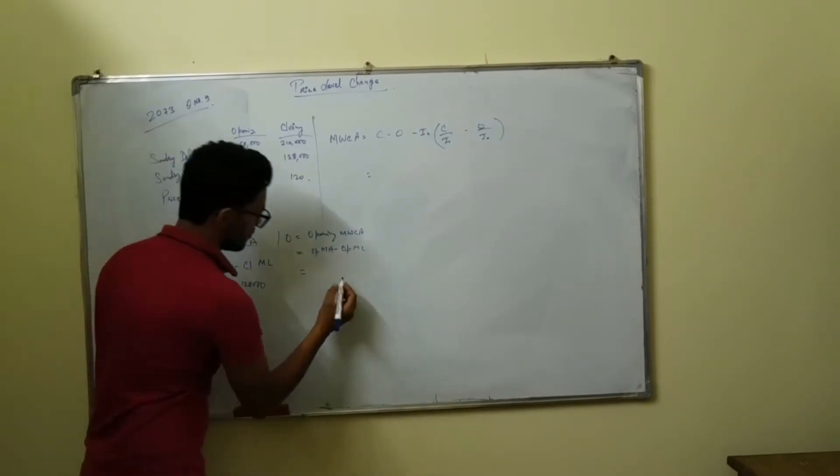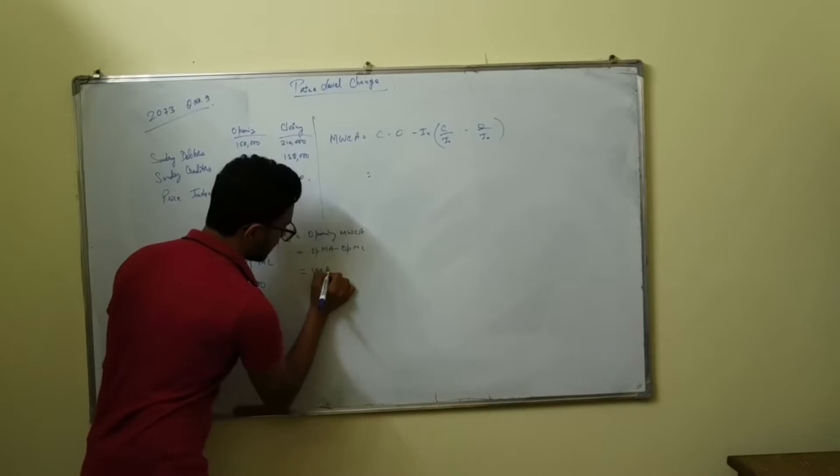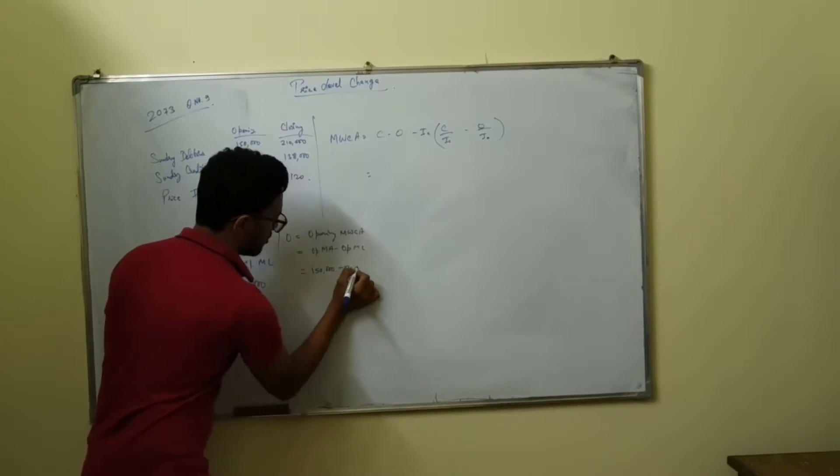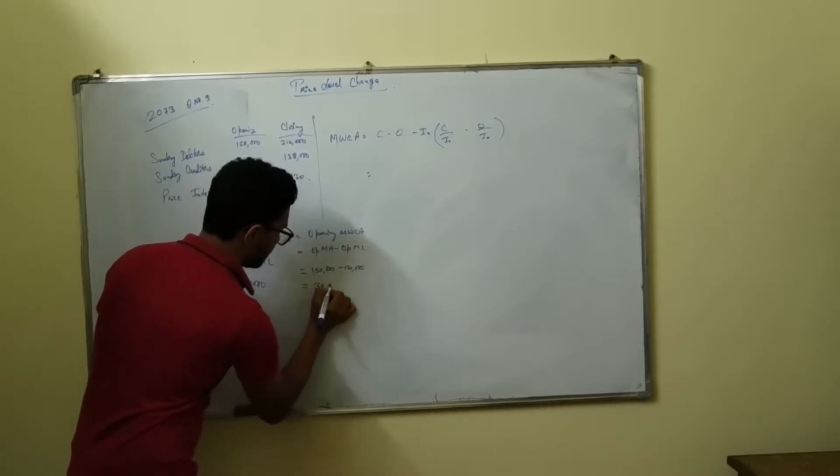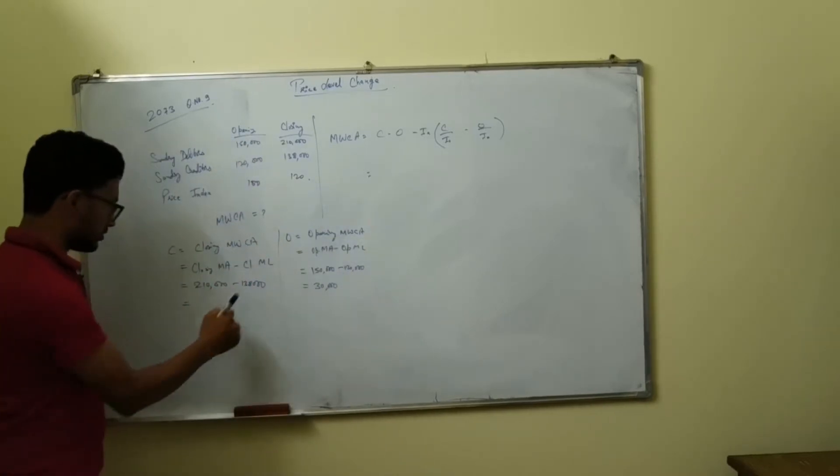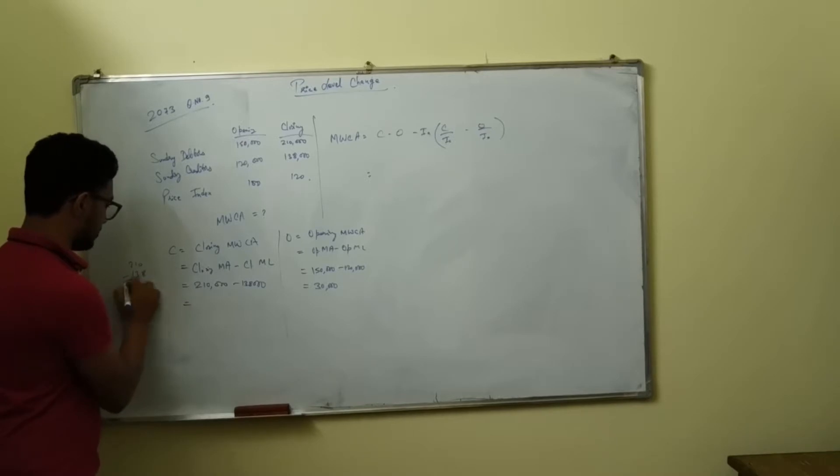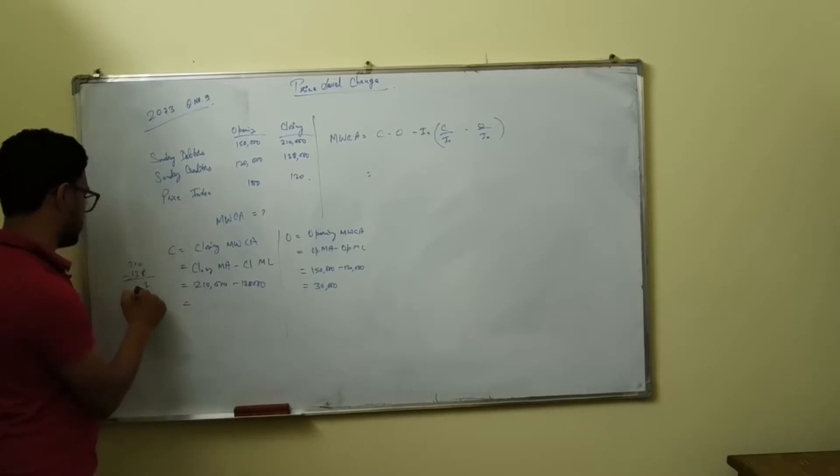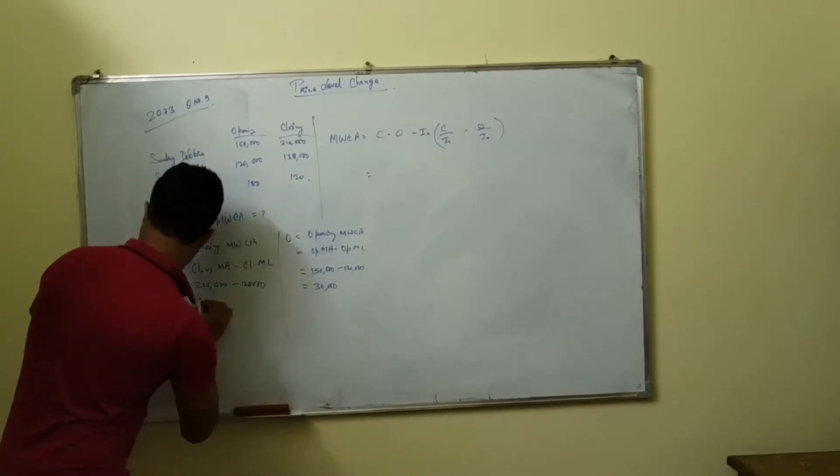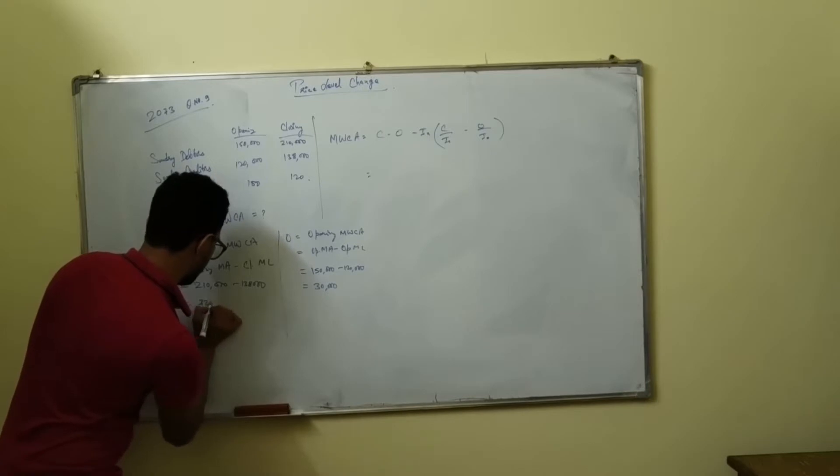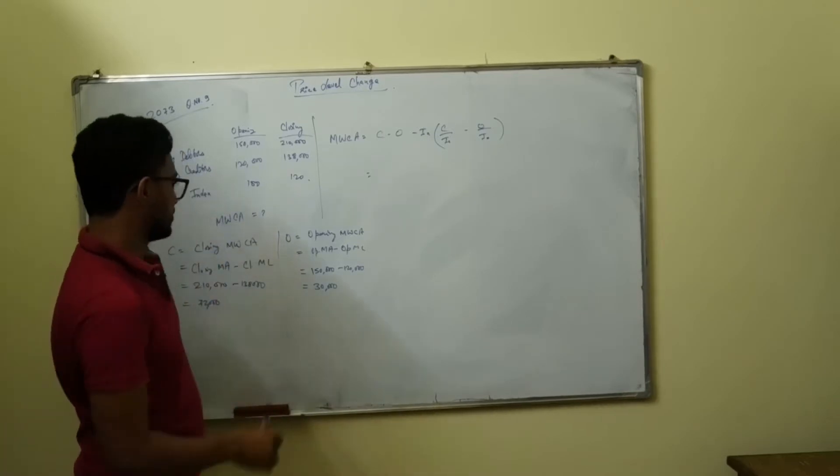Which is 150 minus 120, this will give us 30,000. This will give us 132,000, so 72,000. This is our closing.